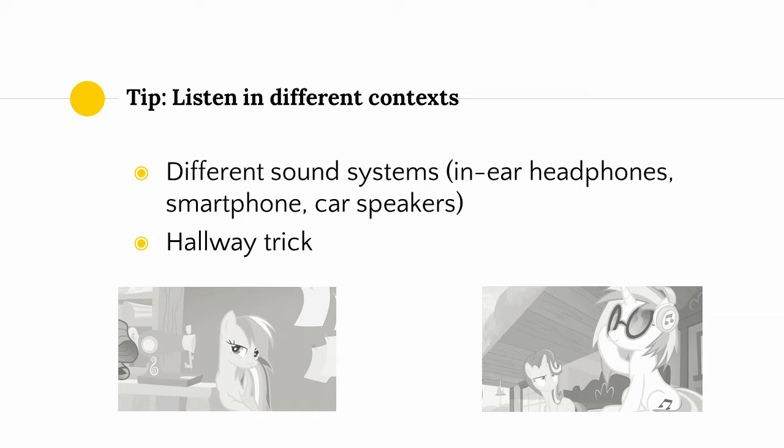To listen in a different context, you can listen on a different sound system — such as your smartphone, car speakers, or laptop speakers — or you can literally listen from a different location. Different locations will have different kinds and levels of ambient noise, as well as spatial characteristics, all of which can color the way that you hear your productions. One popular mixing trick is to listen to your production from speakers down a hallway.